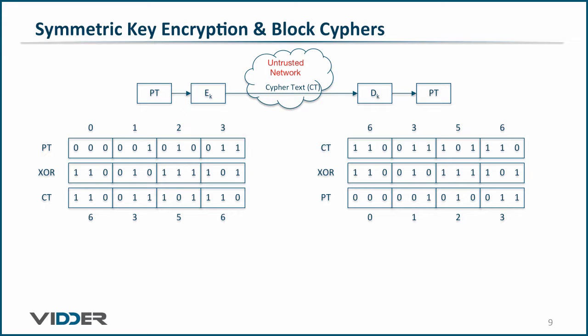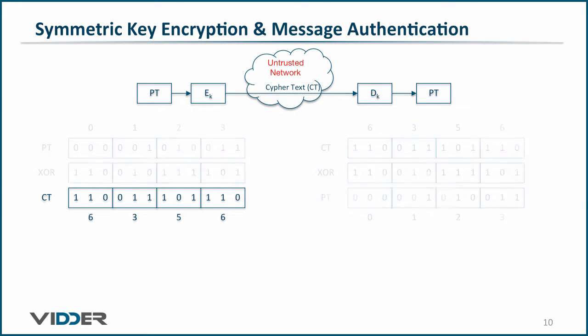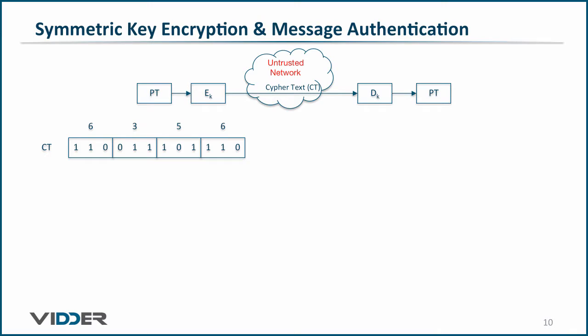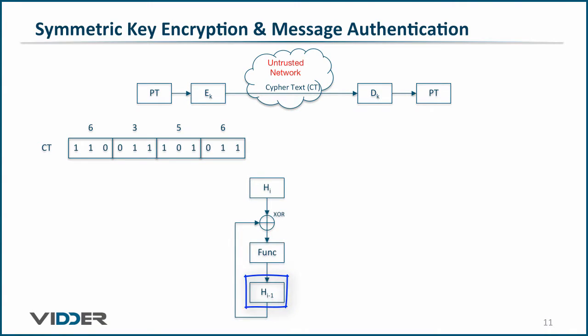We succeeded in providing secrecy over an untrusted network, but we also need to prove integrity of the data. To do that, we need to create a message authentication code or hash of the data. We will start with the ciphertext of the data. Now we need some kind of feedback algorithm that takes the previous input, combines it with the present input, runs it through some function, making it very hard to go backward.